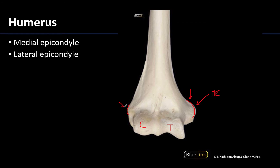The lateral epicondyle is on the same side as the capitulum, so it's going to be more lateral. It's certainly less robust than the medial epicondyle, but nonetheless projects somewhat laterally and is on that same plane. The radial collateral ligament of the elbow attaches here, but more importantly the common extensor tendon of some of the muscles in the posterior or extensor compartment of the forearm will attach on the lateral epicondyle.